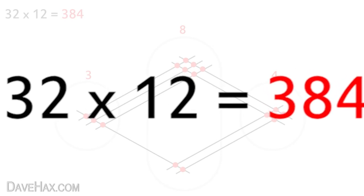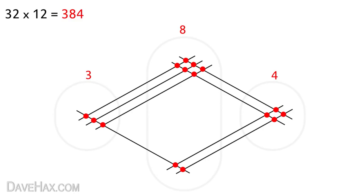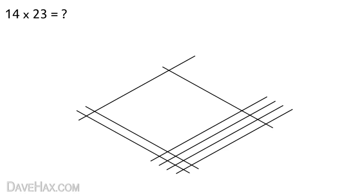But it does get a little more complicated if we add more lines. I'll show you. Let's multiply 14 by 23. So draw out the pattern: 1, 4, 2, and 3, mark out our zones. And now let's count the dots. Starting from the right we have 1, 2, 3, 4, 5, 6, 7, 8, 9, 10, 11, 12. So we'll write 12 up here.